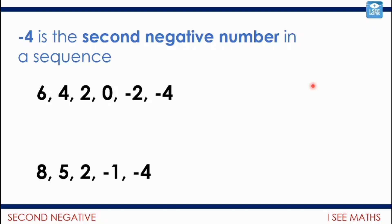But here's another one. It could be something like this. It could be eight, five, two, minus one, minus four. That's going down in steps of three. Now, notice it couldn't go down in steps of four because then I would have zero, minus four. And minus four would be the first negative number in the sequence. Are there any other ways?